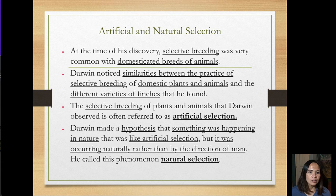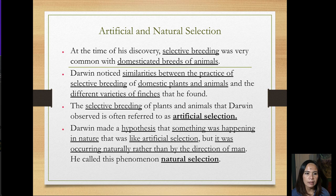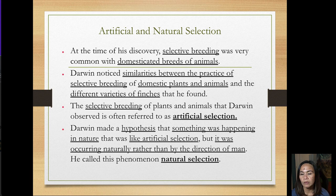Darwin came to realize something significant was going on. At the time of his discovery, selective breeding was very common in domesticated breeds of animals. Darwin noticed similarities between the practice of selective breeding of domesticated plants and animals and the different varieties of finches that he found.